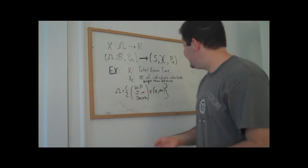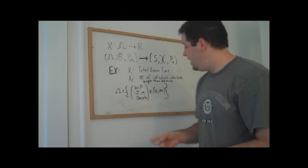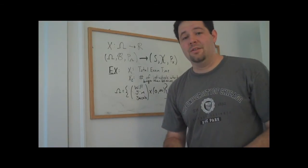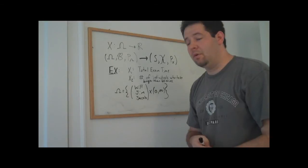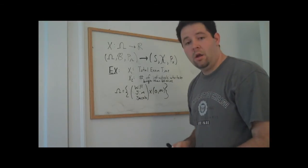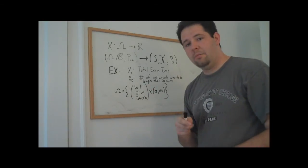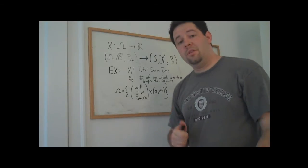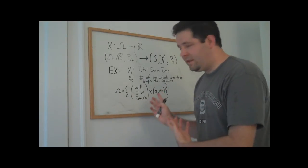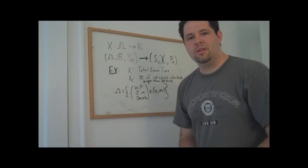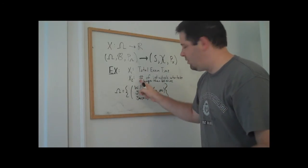x2 we're going to define as the number of individuals who take longer than 60 minutes to complete the exam. Now this could be zero, everyone could finish before 60 minutes. It could be one, it could be either Will, Jim, or Jacob, or it could be two, or it could be three. So this is going to be on a discrete number of points that could be possible. And that's what we're going to call a discrete random variable.